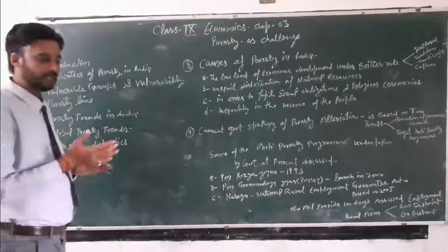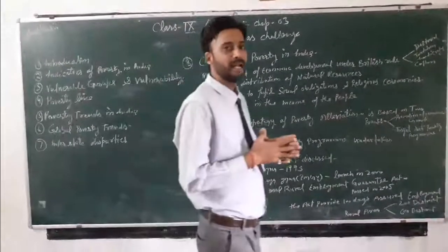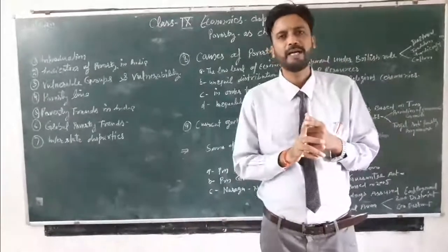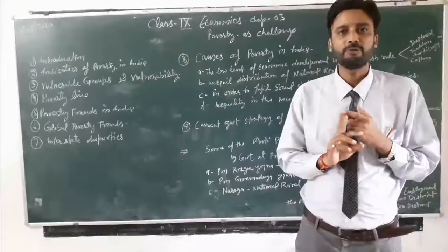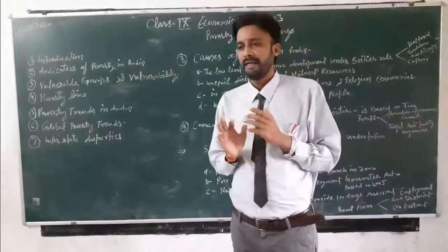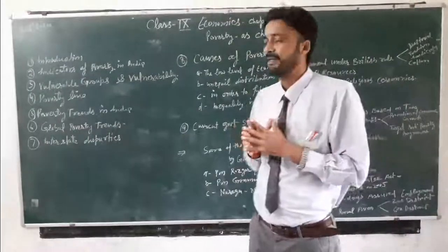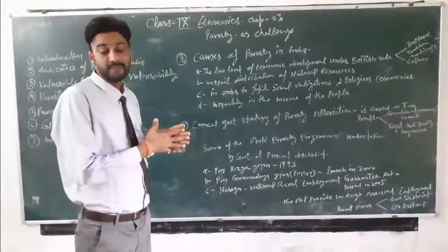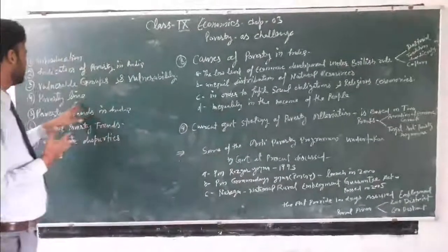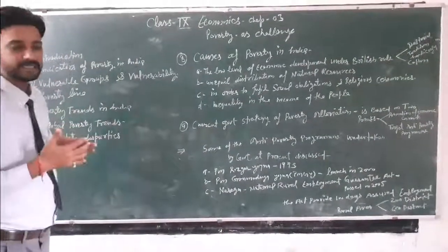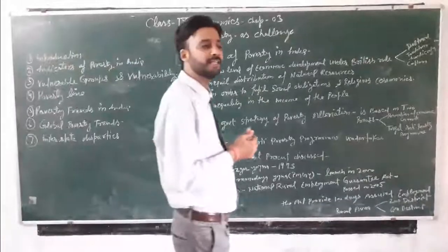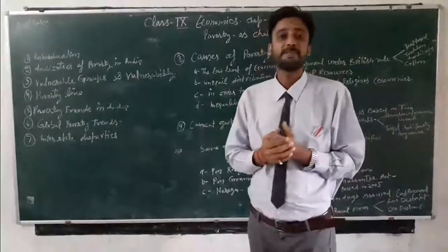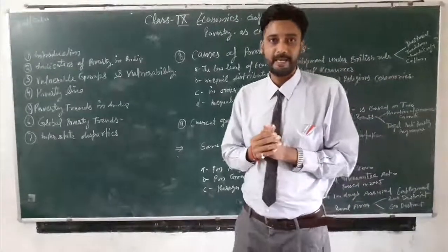The basis of the poverty line is of two types. First is the consumption level, and second is the income level. This is determined by the NSSO — National Sample Survey Organisation of India. NSSO is a very important organisation related to the poverty line.